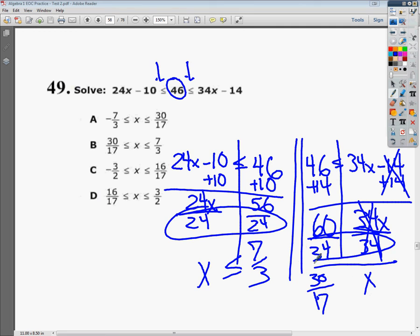60 divided by 34 comes out to give you somewhere in the range of 30 over 17. And in this case, once again, I'm dividing by a positive, so I don't need to flip it. So x is greater than 30 over 17.